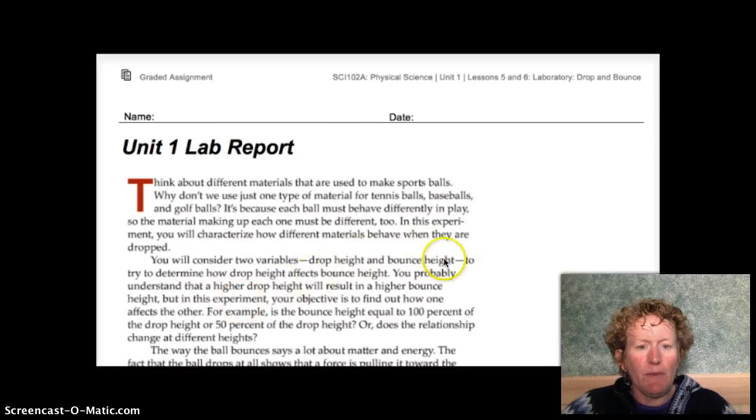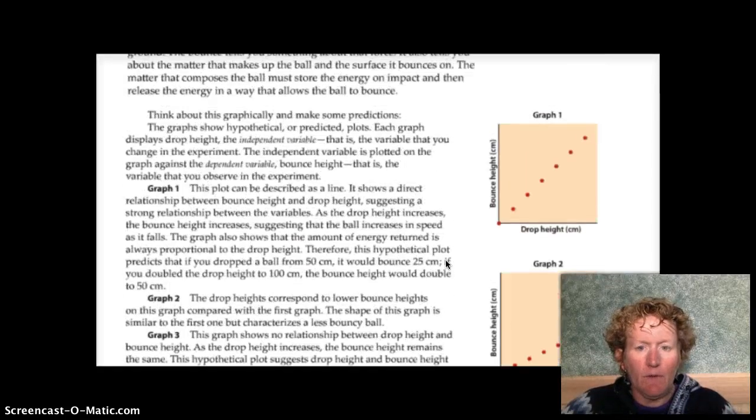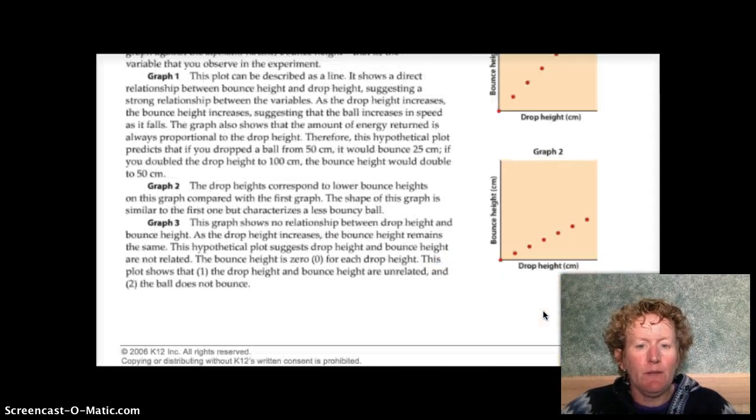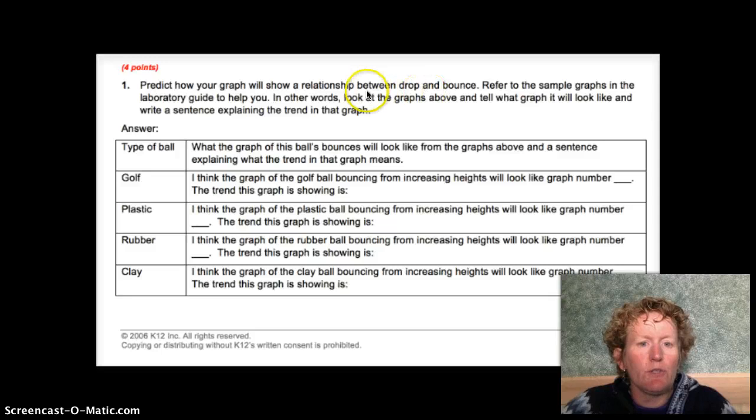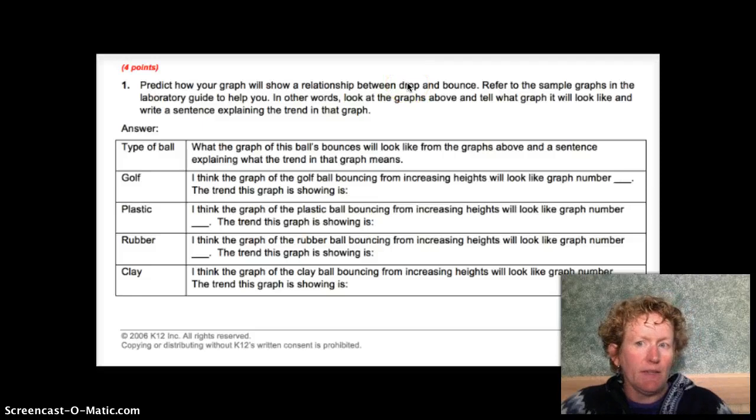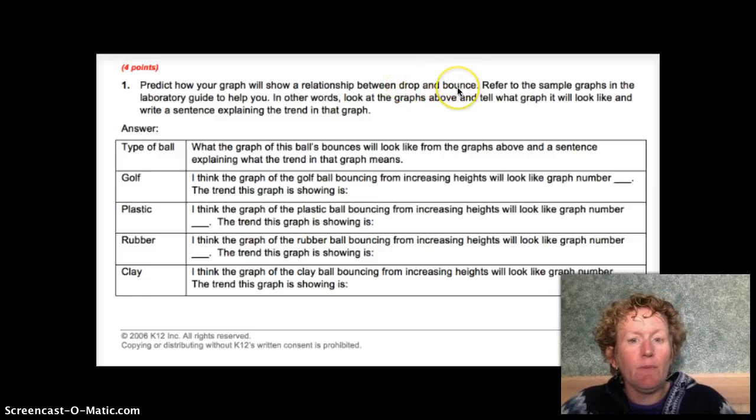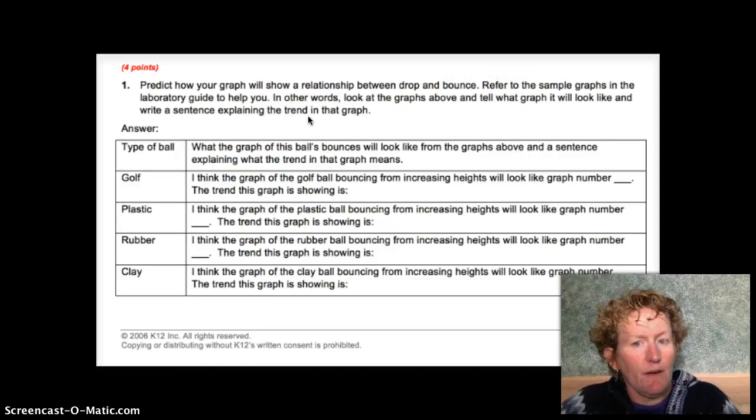So we're looking for the relationship between the drop height, the independent variable, and the bounce height, the dependent variable. Here's the lab report that you have downloaded or gotten from your K-mail. And here are those graphs we've been talking about right in your lab report. So our first question is going to ask you, predict how your graph will show a relationship between drop height and bounce height. That's the independent variable on the x-axis and the dependent variable here on the y-axis.